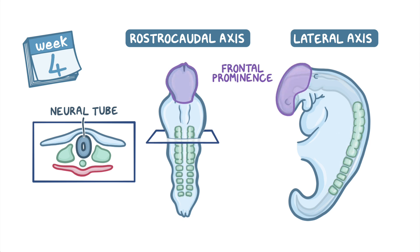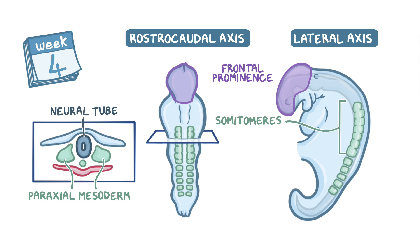Lateral to the neural tube is the paraxial mesoderm, which partially segments rostrally to form somitomeres, and fully segments caudally to form somites, the first in the series being the occipital somites.